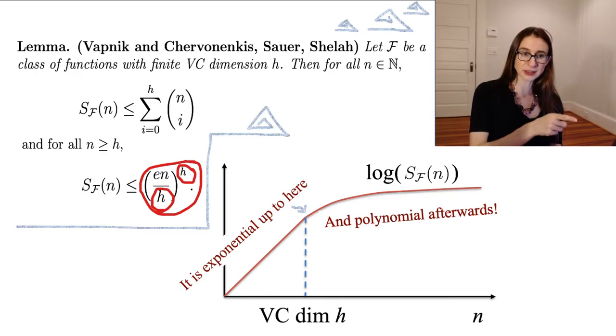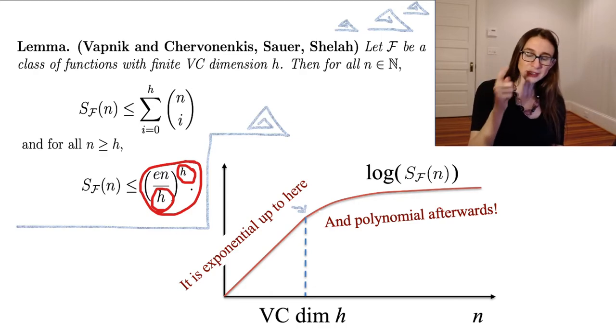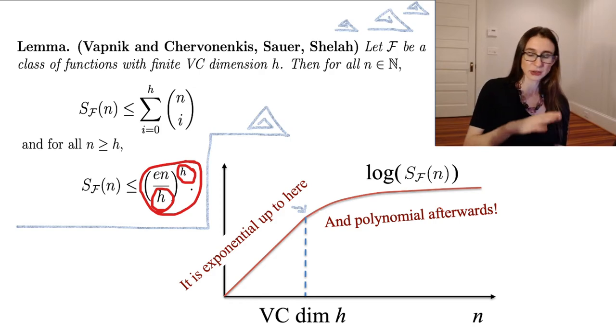Now, if I take this lemma and I plug it directly into the growth function theorem, I now have a bound on the generalization error that depends on the VC dimension. So I'm just going to show you what happens when you do that.